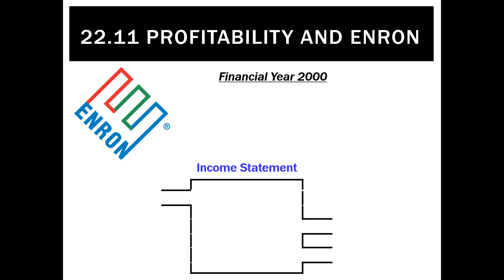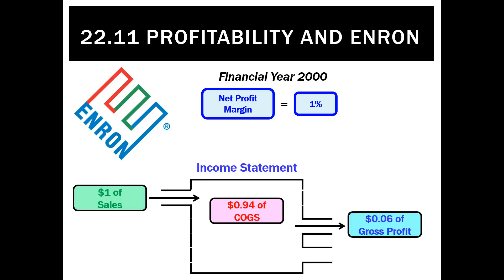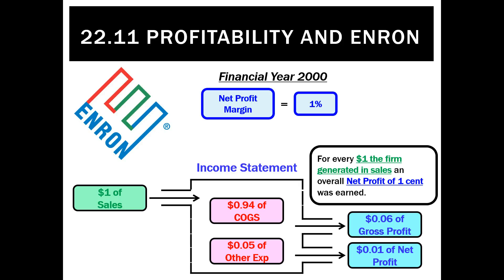That will show up in our net profit margin. For Enron, the net profit margin was only 1%, which is very low. Looking at the income statement, for every dollar of sales, $0.94 was cost of goods sold, leaving $0.06 of gross profit. That meant $0.05 in every sales dollar was other expenses, leaving only $0.01 of net profit from every dollar — which is really, really low.